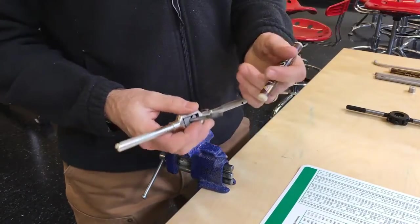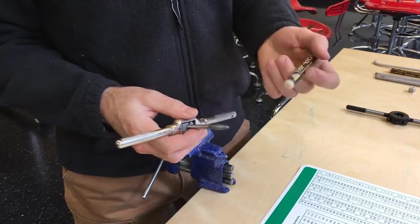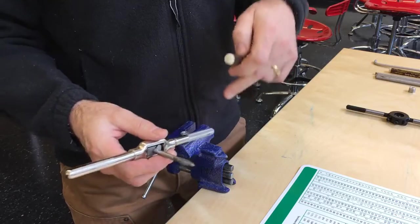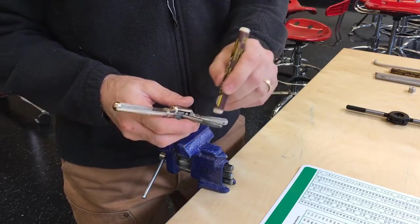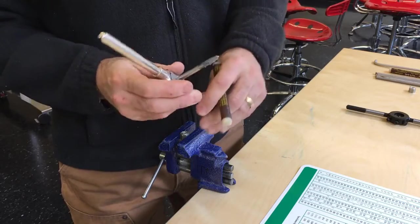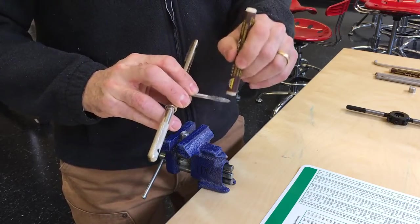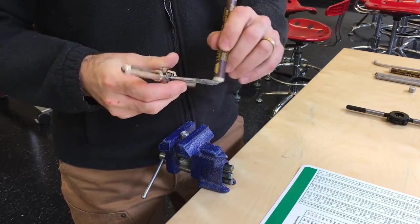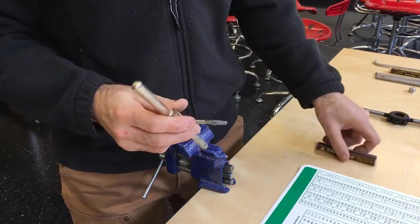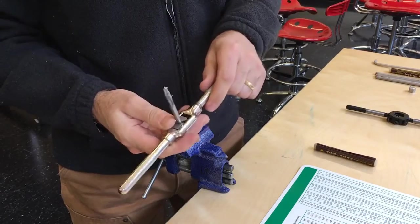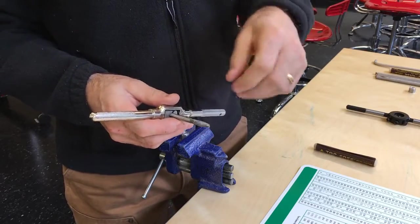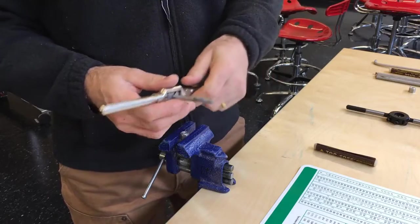Now, before I start cutting, I want to add some wax to it. This wax is designed for doing exactly this, for tapping, and I put that in because it lubricates, which keeps it cool and prevents a jam, which would potentially break the tap. And it also keeps the little chips of metal contained so that they don't fly all over the place.